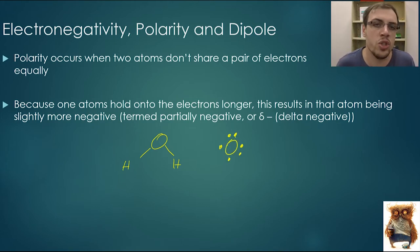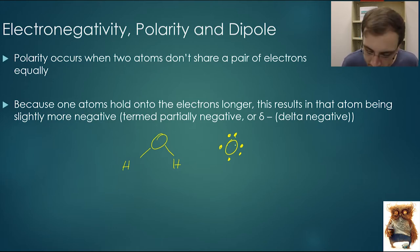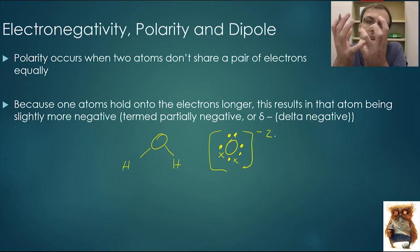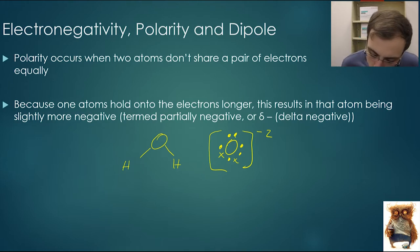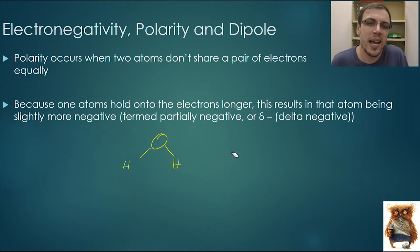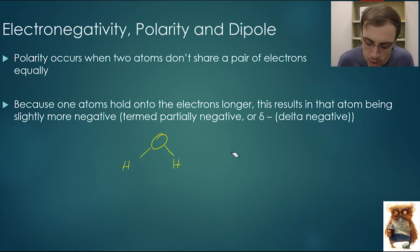That is oxygen in its neutral state. As it tries to steal these electrons, it will get more negative. If it steals two electrons, you would refer to that as being negative two, because as it gains those electrons it gets more negative. However, when it comes to polarity, we cannot give it a formal charge — we cannot say it is negative one or negative two — because it hasn't actually taken one of those electrons. It just holds on to it for a little bit longer.